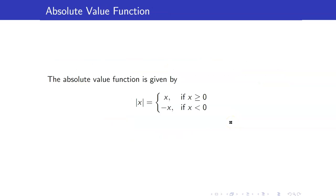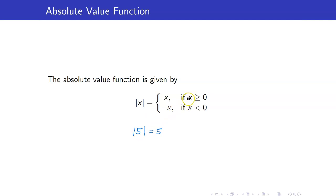An example of a piecewise defined function is the absolute value function. The expression inside the absolute value sign equals itself if the expression is greater than or equal to 0, and equals its negative if the expression inside is less than 0. For example, the absolute value of 5 equals 5 because 5 is greater than or equal to 0, so it equals itself. The absolute value of negative 5 equals the negative of negative 5, since the expression inside is negative.